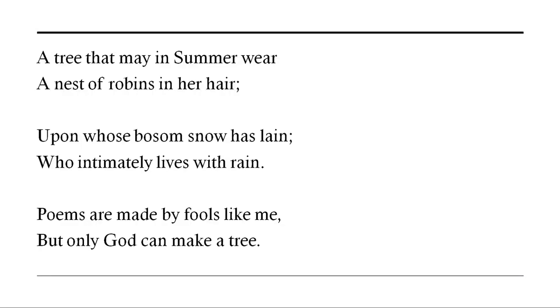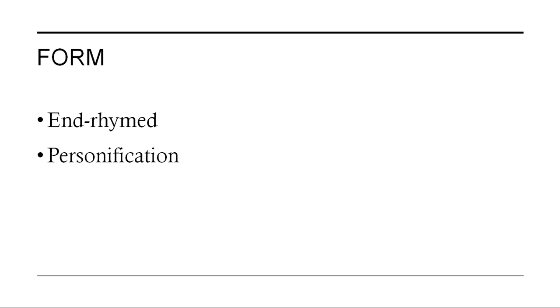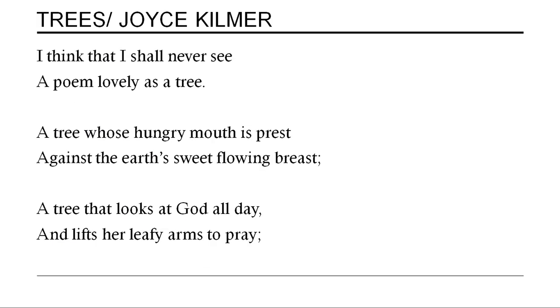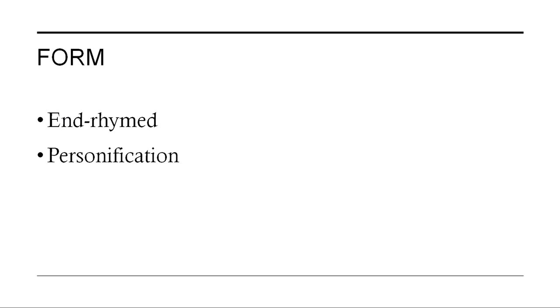The poem ends: 'Poems are made by fools like me, but only God can make a tree.' Words and language can be achieved by human beings, but trees have to be made by some divine force. Comparing the two poems: in Kilmer's poem the tree is personified, quite in contrast with Gieve Patel's poem where human beings must become like the tree. Kilmer's poem is also rhymed, unlike Gieve Patel's free verse.